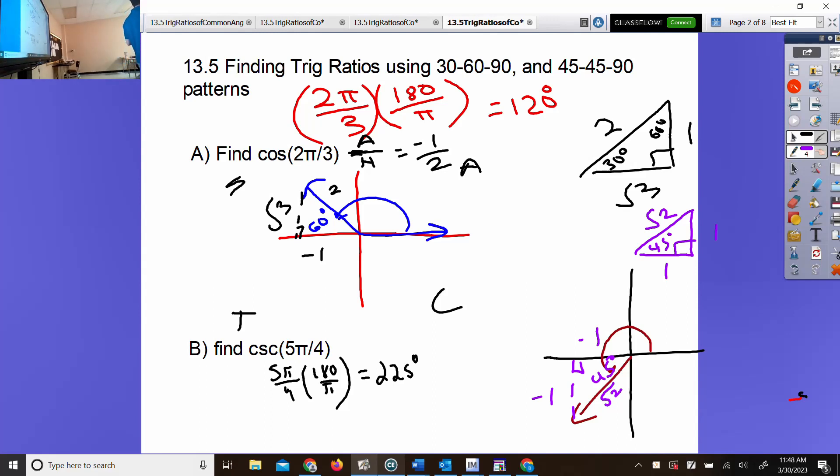Figure out the cosecant ratio. Cosecant is hypotenuse over opposite. What's hypotenuse? Root 2. What's opposite that 45-degree angle? Negative 1. Don't leave an answer like root 2 over negative 1. What's root 2 over negative 1? Negative root 2. Why are you doing all that button pushing?